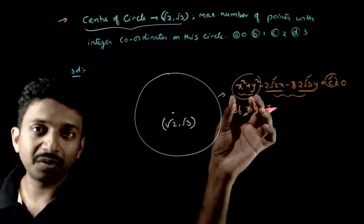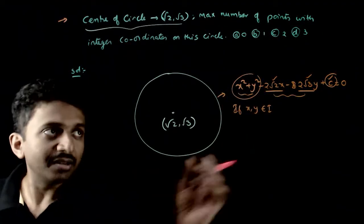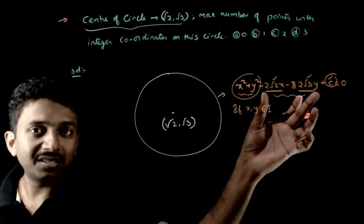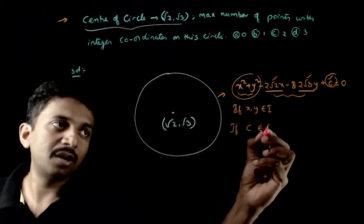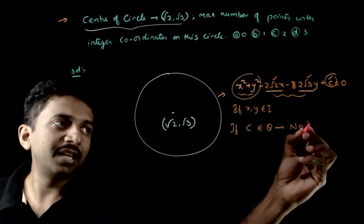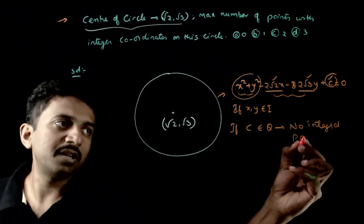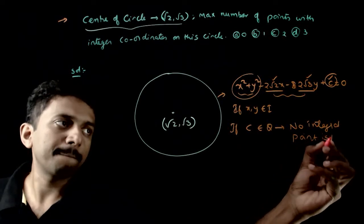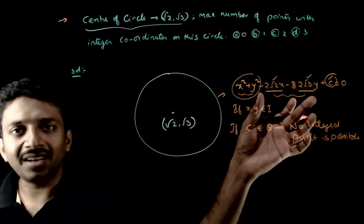If I assume x² + y² as minus c, then I can cut x² + y², but I cannot cancel these terms. If c is rational, then no integral point is possible. So if c belongs to rational numbers, you cannot cancel them.